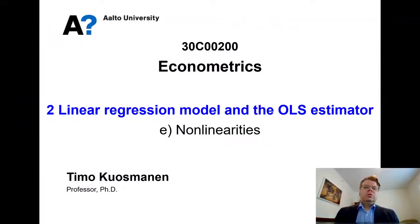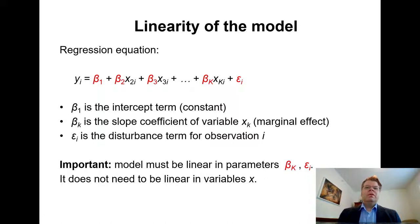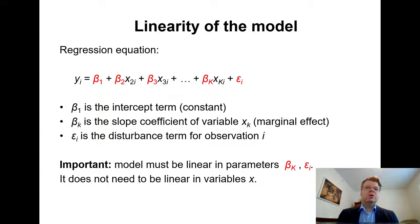As the last lesson on linear regression, I want to clarify the question about linearity of linear regression and how we could also model non-linearities. This is something that often causes confusion and gets too little attention in econometrics texts. I want to emphasize again that the regression equation — the linear regression model — is linear in terms of the parameters, linear in terms of the betas and epsilon, but it doesn't necessarily have to be linear in terms of the x and y variables. Therefore, the term 'linear regression' might appear more restrictive than it actually is.